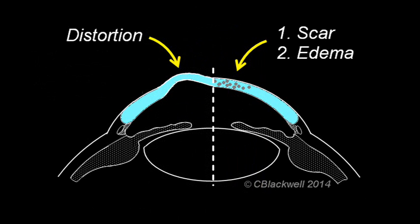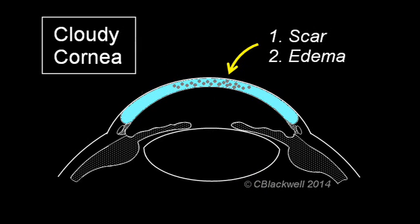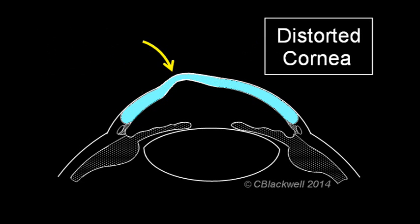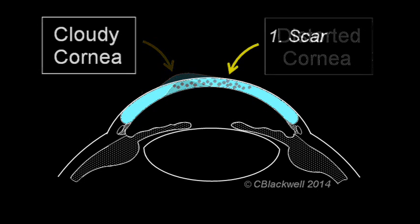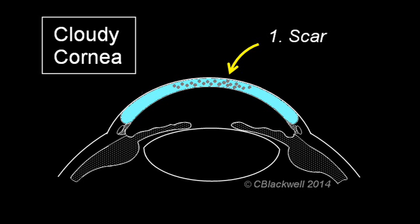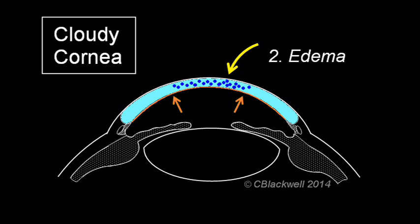Corneal problems that cause reduced vision fall into two categories. One is loss of clarity because of scarring or edema. The other is loss of the smoothly curved surface. Scarring would typically result from infection like a bacterial ulcer, recurrent herpes virus, or injury. The cornea also loses clarity if there is buildup of fluid, called edema.